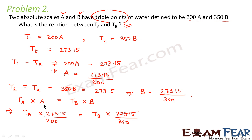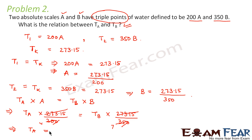The 273.15 cancels on both sides. Simplifying 1/200 versus 1/350: cross-multiplying gives us 350 × TA = 200 × TB, which simplifies to TA = (4/7) TB.